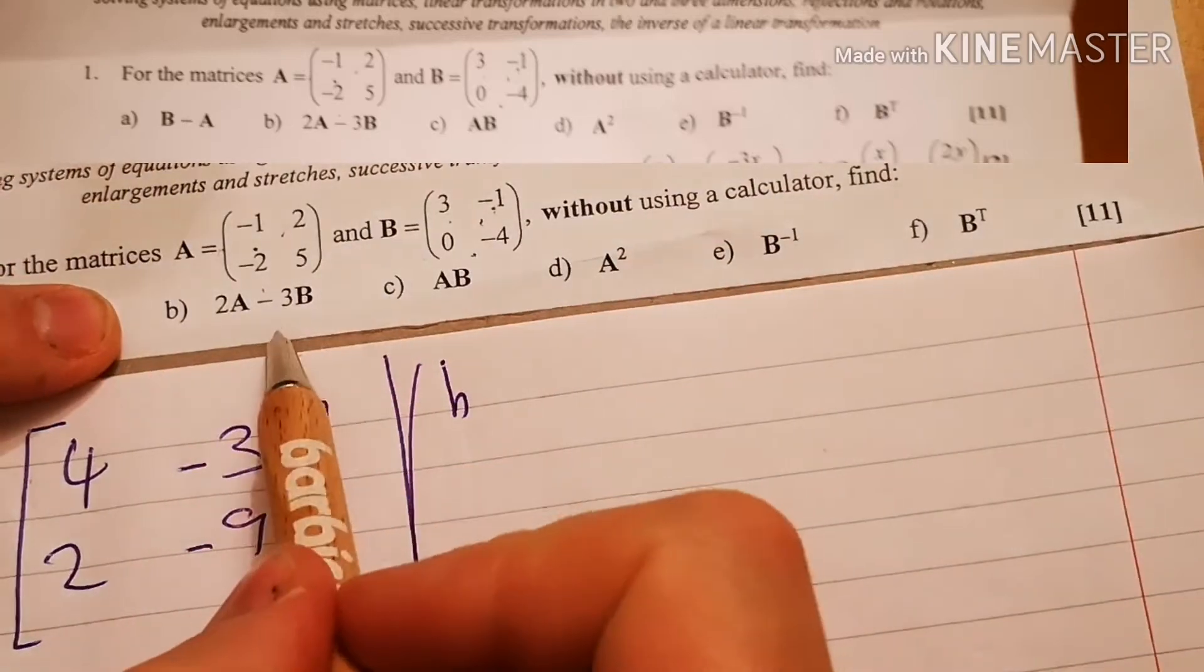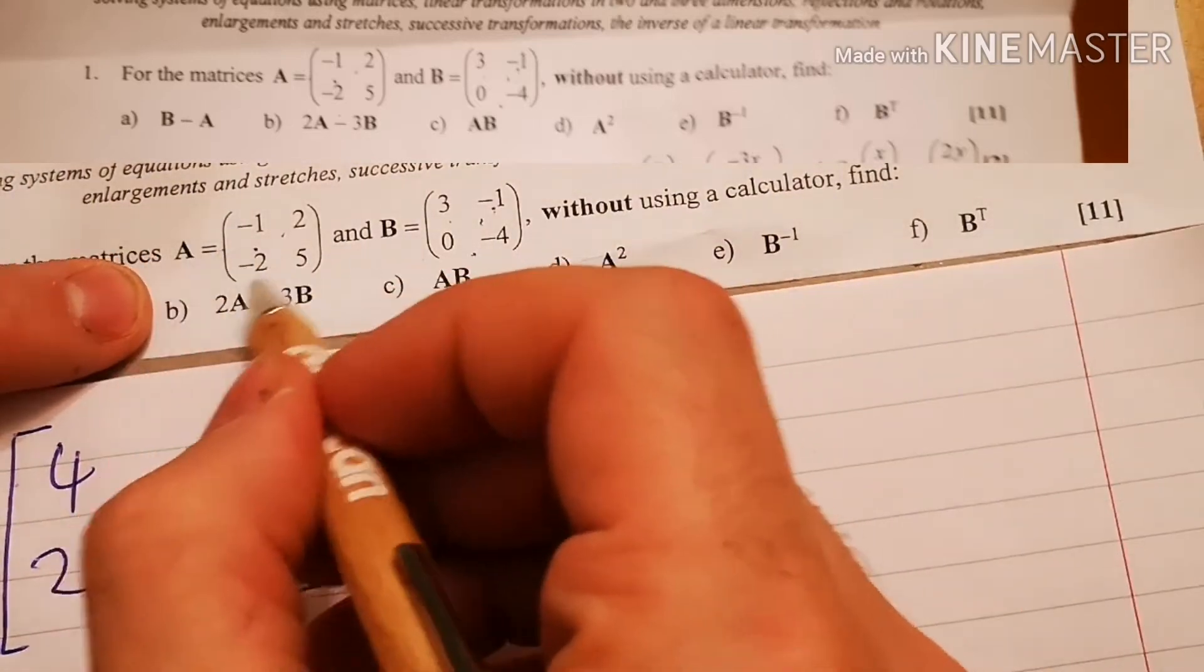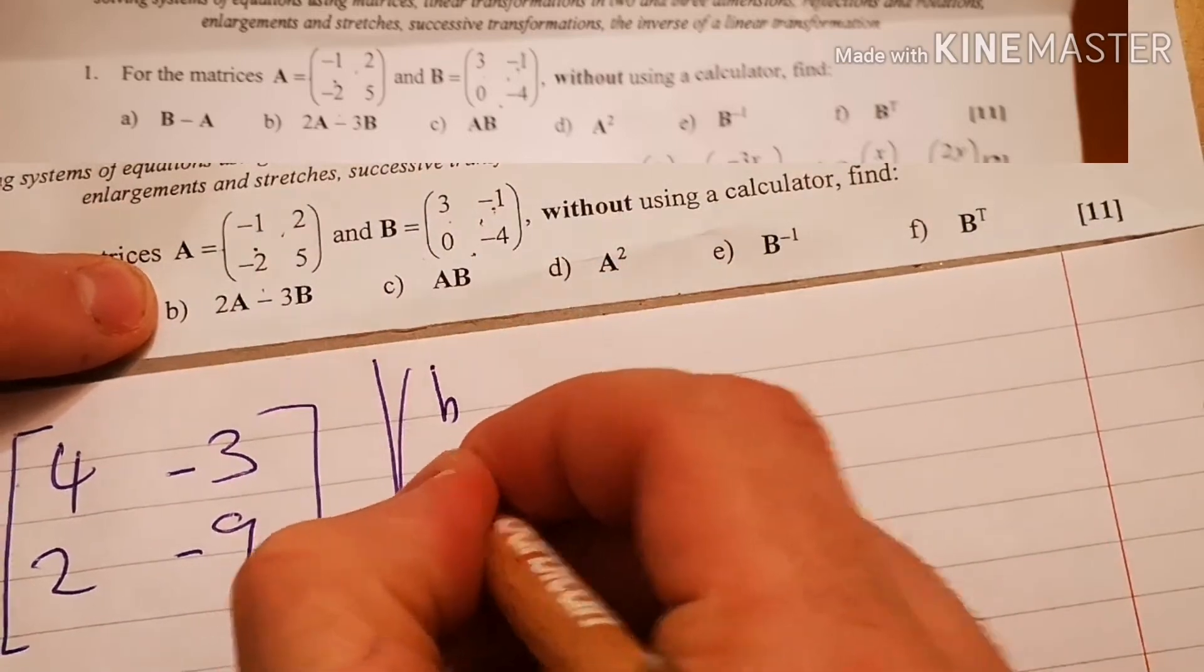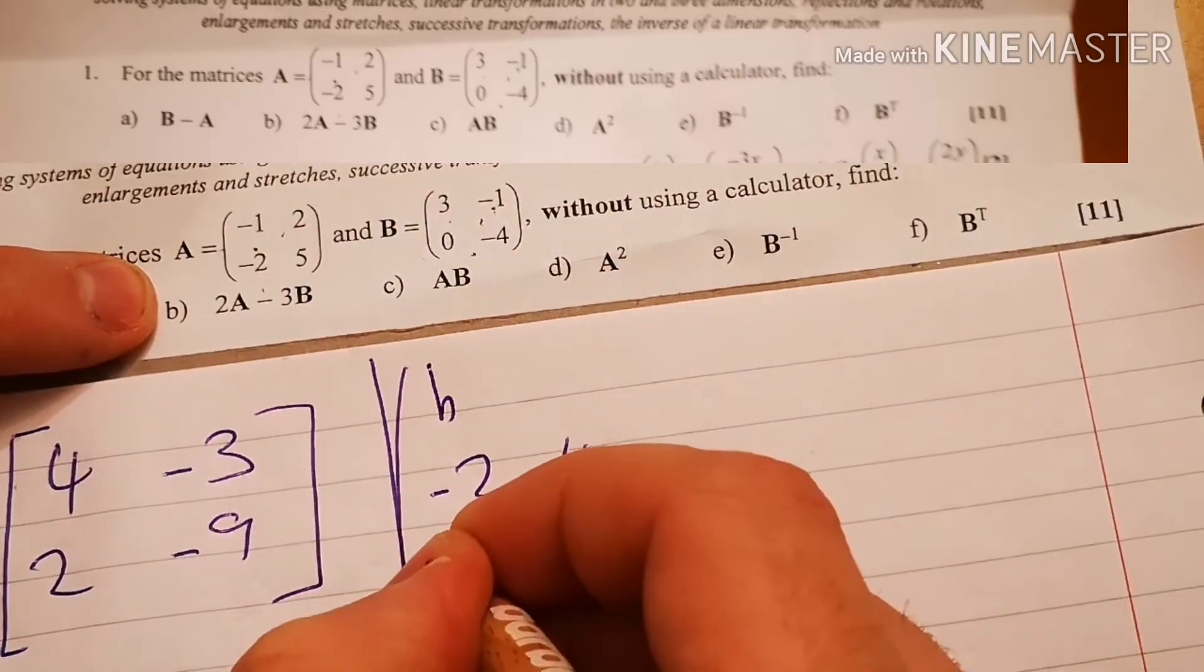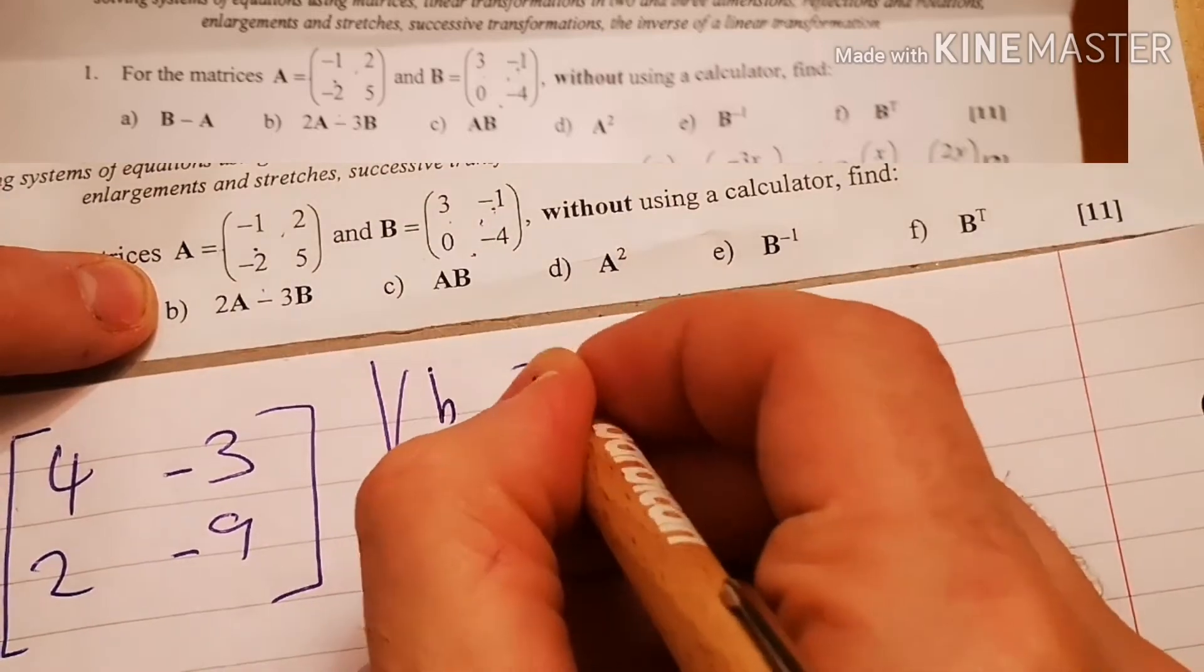My B. 2A minus 3B. So I'm actually going to multiply them first. I'm going to times A by 2 to make it 2A. To make it minus 2, 4, minus 4 and 10. That's 2A.